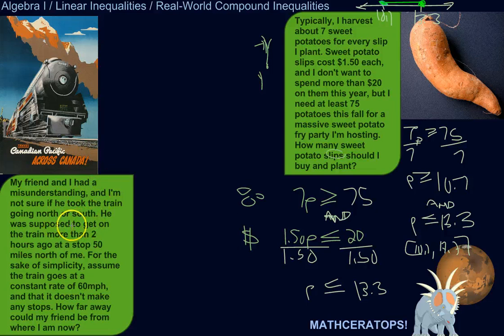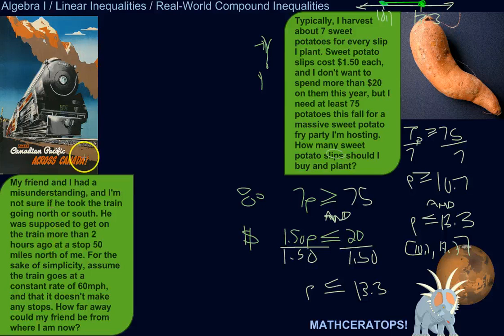He was supposed to get on the train more than two hours ago at a stop 50 miles north of me. For the sake of simplicity, assume the train goes at a constant rate of 60 miles per hour and doesn't make any stops — we're simplifying the situation. How far away could my friend be from where I am now?